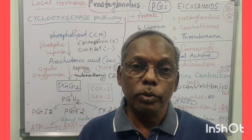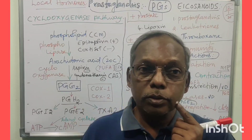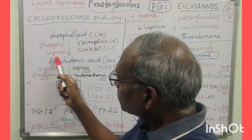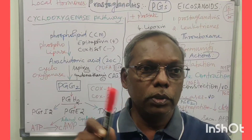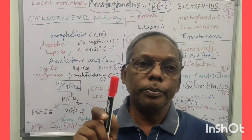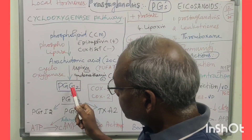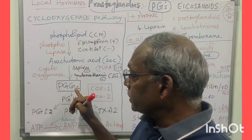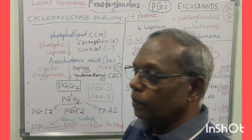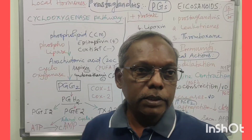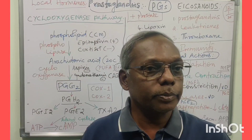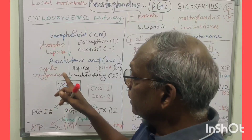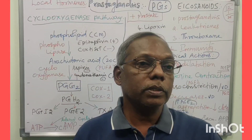Arachidonic Acid is an essential fatty acid — a polyunsaturated fatty acid, a 20-carbon long-chain fatty acid. From Arachidonic Acid, via Phospholipase A2, we get Prostaglandin. The first prostaglandin formed is PGG2, that is type G2. The enzyme responsible is Cyclooxygenase (COX).